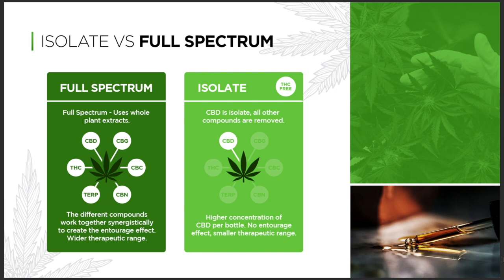But let's say you're trying out for the Olympics and you can't risk having traces of THC, so you want to go with the isolate. Why? Because on the isolate side, all the other compounds are removed — it's just CBD.